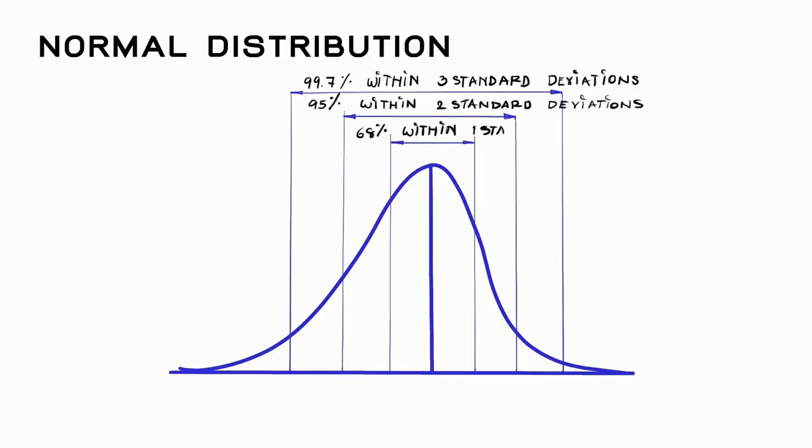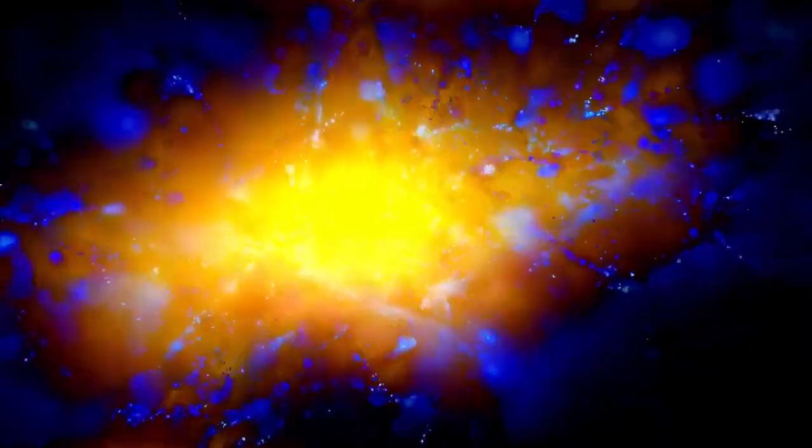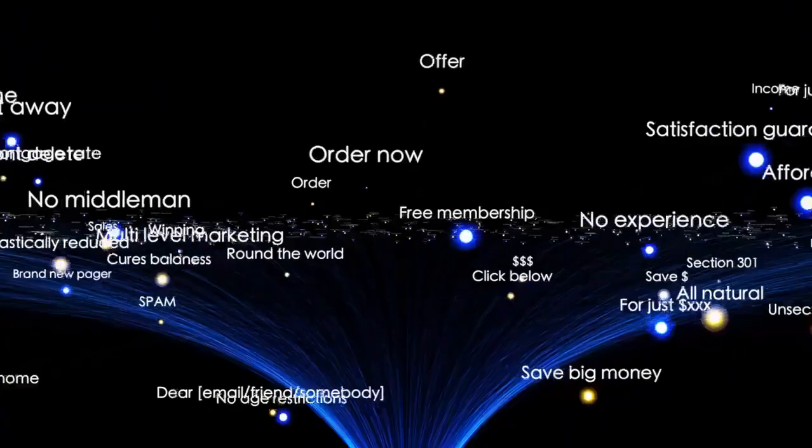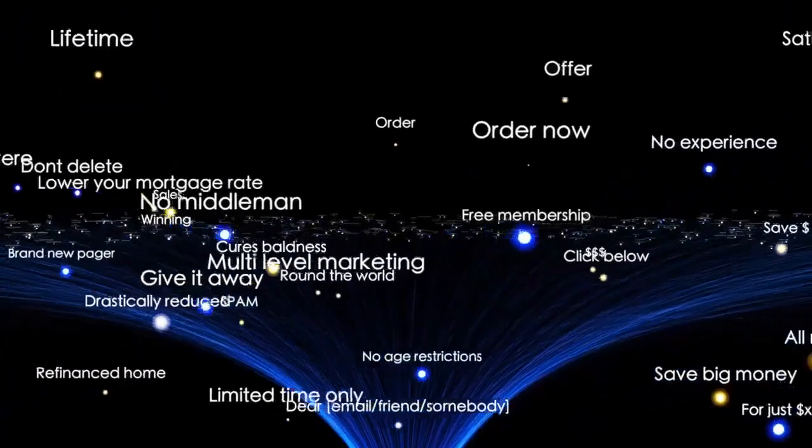In essence, the hot Big Bang, while our most accurate model of the early universe, wasn't its absolute genesis. There's a limit on how far back we can extrapolate the temperature and density of a matter and radiation-filled universe.